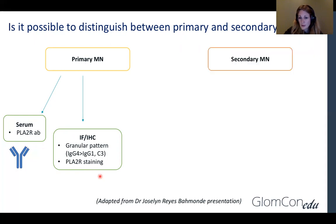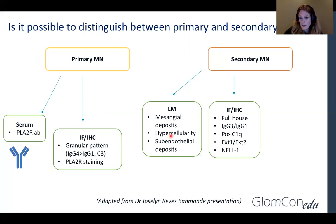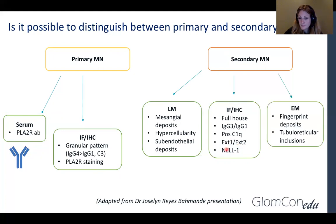Factors that can suggest secondary causes, like lupus nephritis or others, include besides sub-epithelial deposits also sub-endothelial deposits, mesenchymal deposits, and hypercellularity. Immunofluorescence can show a 'full house' pattern that suggests lupus nephritis, and a dominance of IgG3 or IgG1 rather than IgG4 as commonly seen in the primary form. Exostosin-1 and exostosin-2 have been associated with lupus nephritis, and a new biomarker has been associated with malignancy. Electron microscopy findings of fingerprint deposits and multiple reticulary inclusions suggest secondary causes such as lupus nephritis.